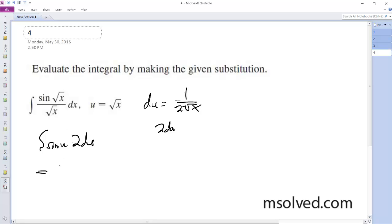Which is equal to negative cosine of u, because the integral of sine of x is negative cosine, and then we have 2 du.